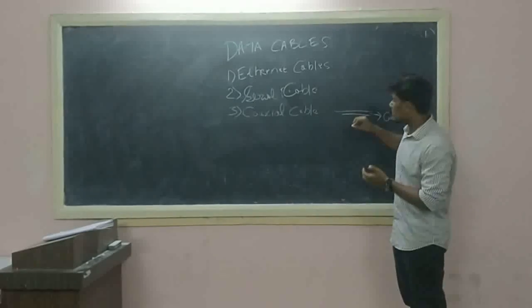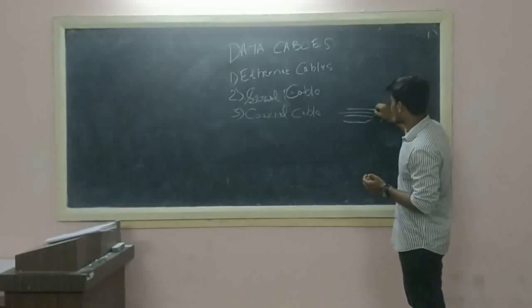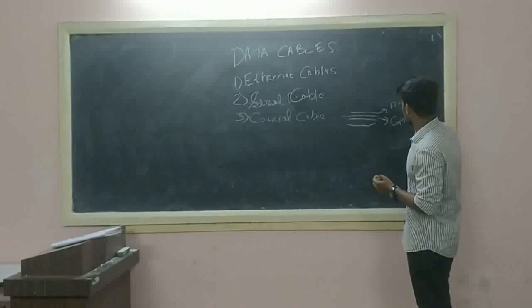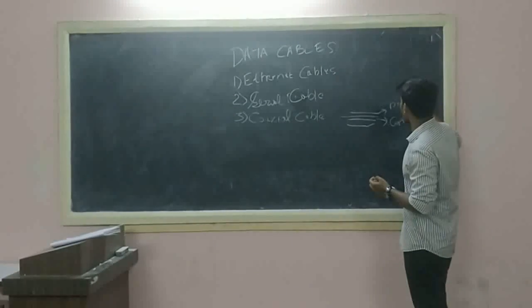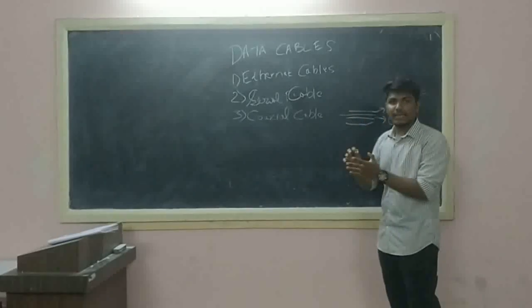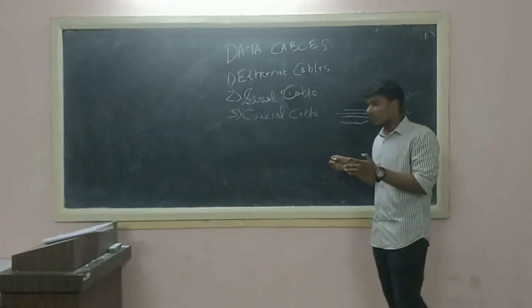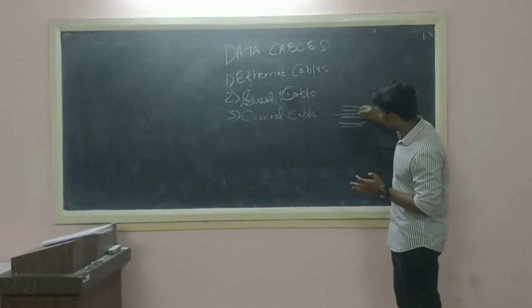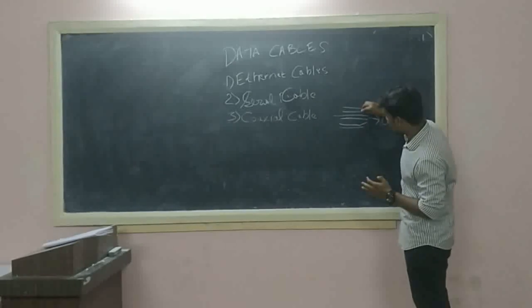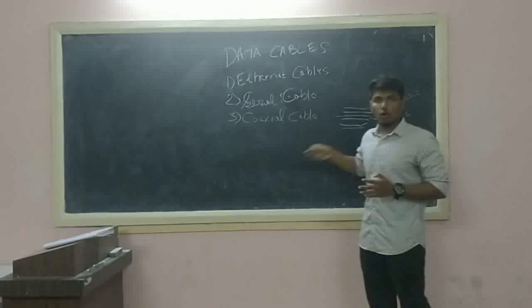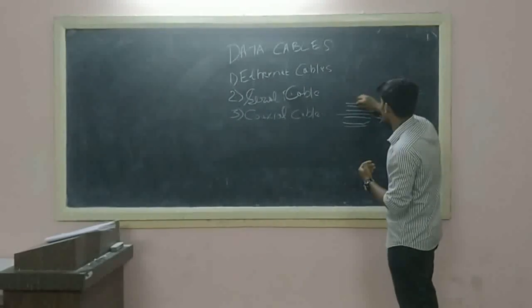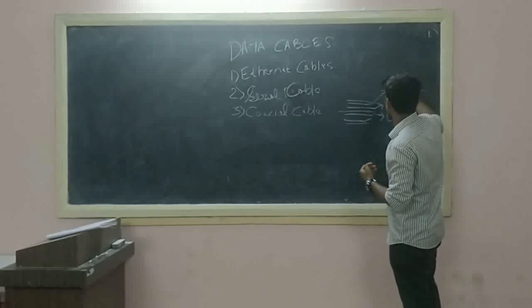The coaxial cable has an insulator of dielectric material. This is the first layer. The second layer is the dielectric material. The third layer is formed by a braided shield. And the outer wire is covered by a plastic sheath.